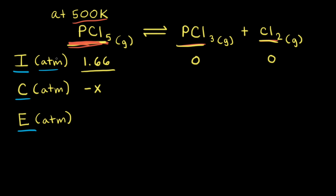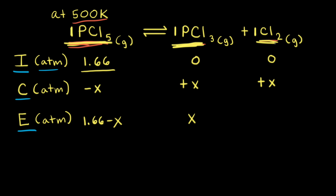Next, we need to look at mole ratios. The mole ratio of PCl5 to PCl3 is one to one, so if we're losing X for PCl5, we must be gaining X for PCl3. The same idea with Cl2 — the coefficient in the balanced equation is one, so we're gaining X for Cl2. Therefore, the equilibrium partial pressure for PCl5 is 1.66 minus X, for PCl3 it's X, and for Cl2 it's also X.